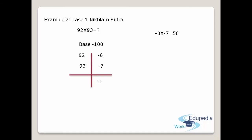Now you have to do cross subtraction. Either of the ways: if you do 92 minus 7, you will get 85, or if you do 93 minus 8, you will get the same answer, 85. Write that 85 here.